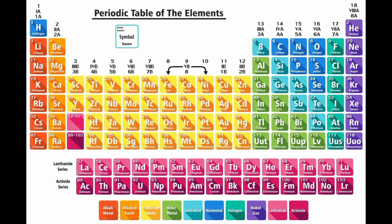Identification: the table can be used to identify unknown elements based on their properties and their location in the table. Classification: the periodic table provides a classification system for the elements, grouping them into categories based on their electronic configuration and chemical behavior. Teaching and Learning: the periodic table is an essential tool for teaching and learning chemistry, as it provides a visual representation of the fundamental principles of the subject. Research: the periodic table is also used in research to design new materials and study the behavior of elements.